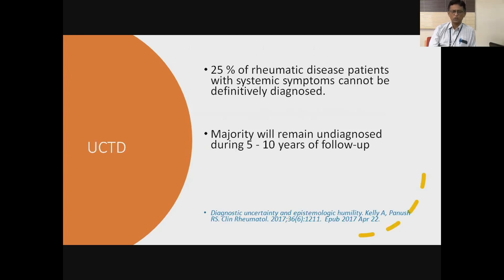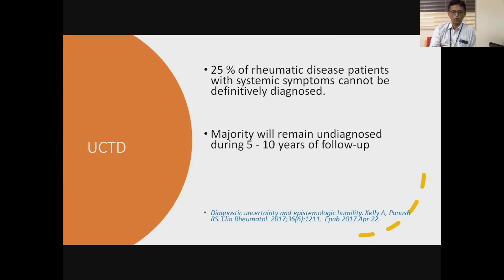Having said all of this about UCTD, despite all this evaluation and management, 25% of rheumatic disease patients with systemic symptoms cannot have a definitive diagnosis. The majority of them will remain undiagnosed for five to ten years, meaning it is better not to label them into a particular systemic rheumatic disease if they are not fulfilling the criteria. No criteria is 100% sensitive or 100% specific. It is better to remain as UCTD and follow them accordingly, rather than labeling them into a particular disease without fulfilling the criteria.